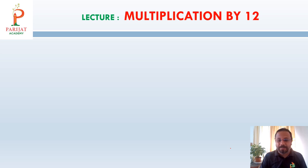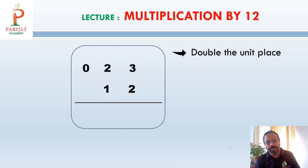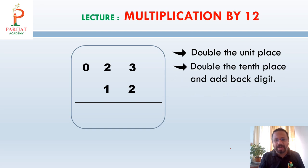Let's go with one example. Suppose 23 multiplied by 12. So first we will go with the steps. Double the unit place. Double the tenth place and add back digit and continue the same process. These three steps you have to remember.